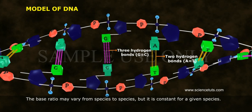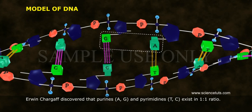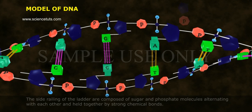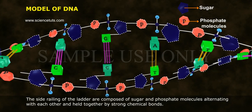The base ratio may vary from species to species, but it is constant for a given species. Erwin Chargaff discovered that purines (A, G) and pyrimidines (T, C) exist in a one-to-one ratio. The side railings of the ladder are composed of sugar and phosphate molecules alternating with each other and held together by strong chemical bonds.